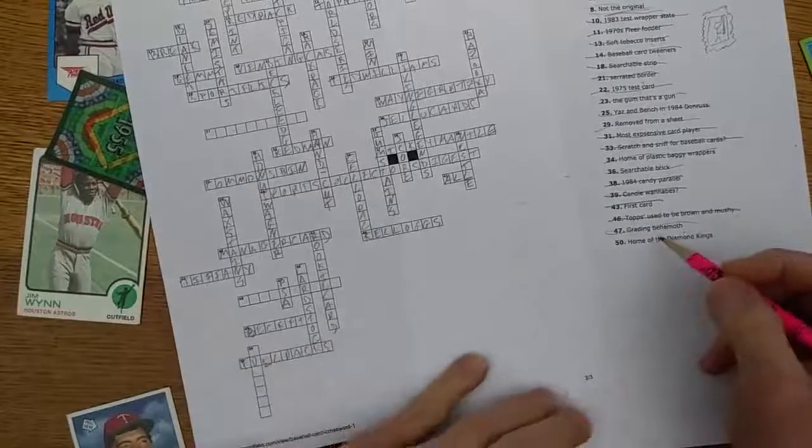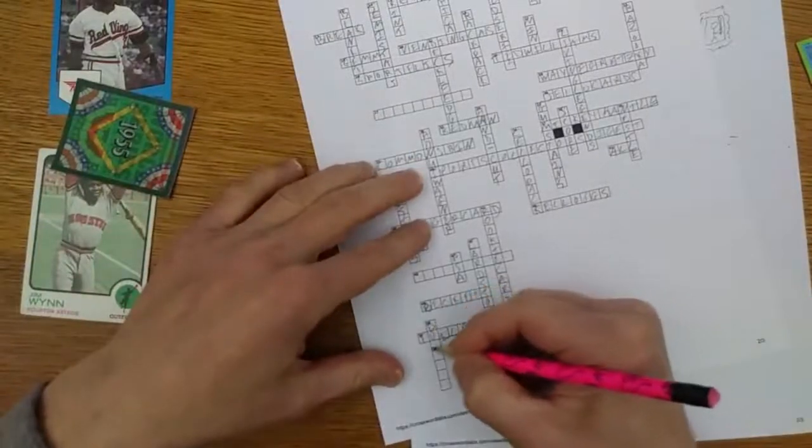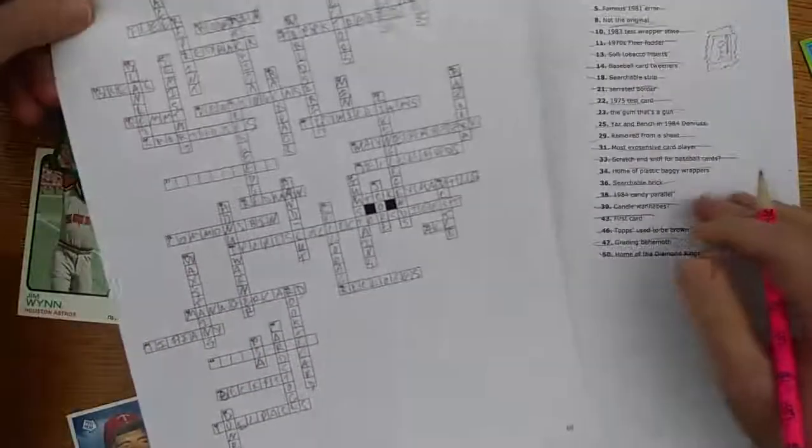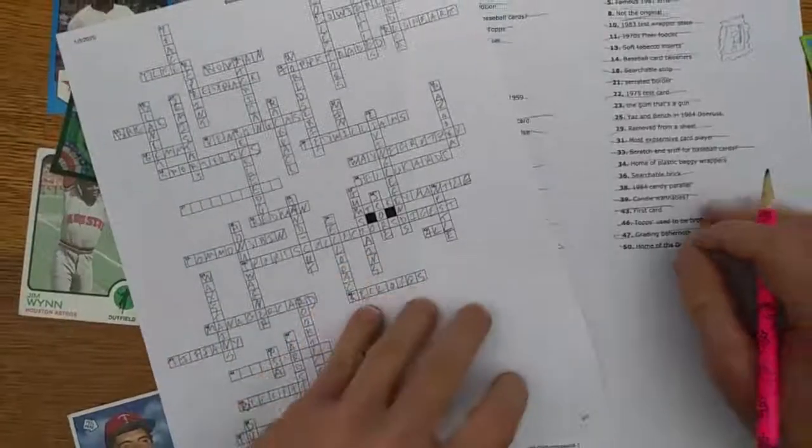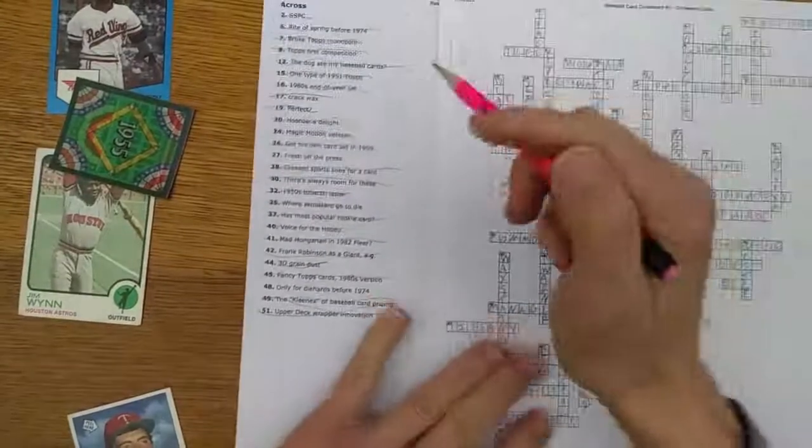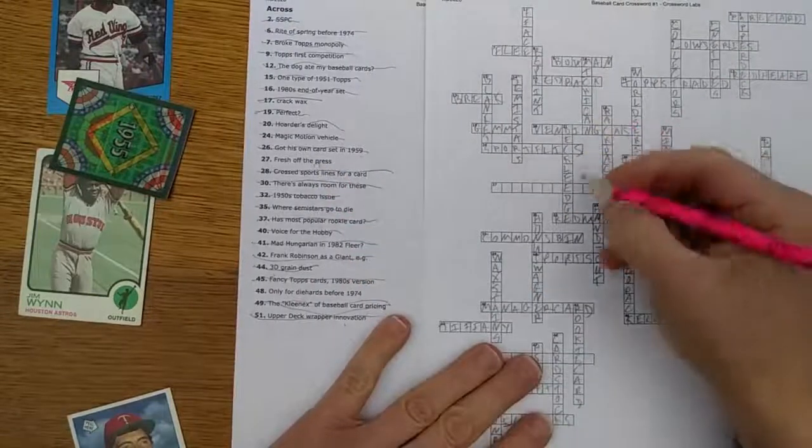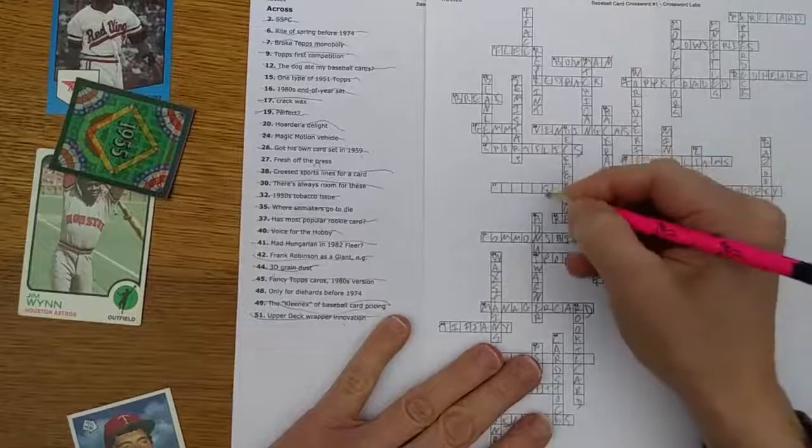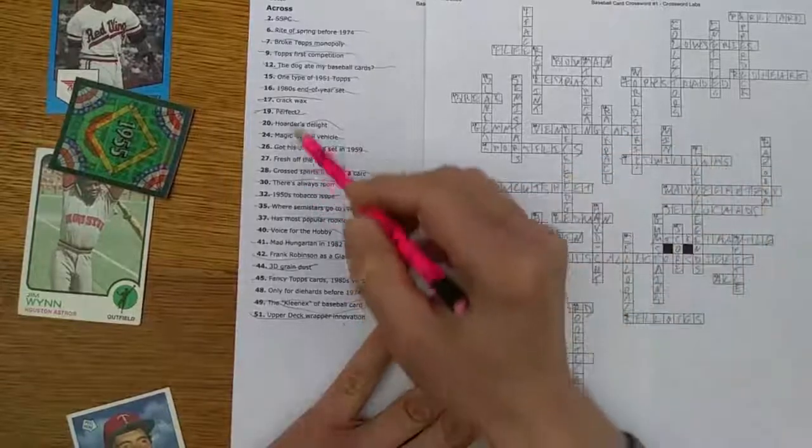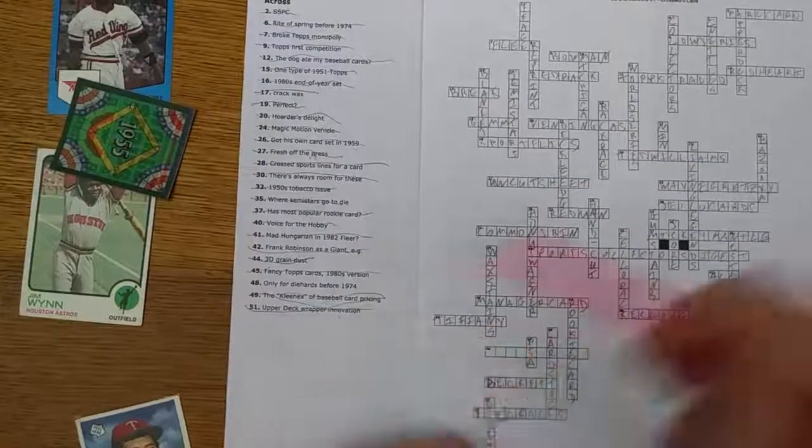Home of the Diamond Kings - it's got to be Donruss. I'm getting close now. So even with my heavy inside edge, I've still got a couple that I haven't figured out yet. Looks like we got all the down clues done, and on the across we have fresh off the press. It's got to be a sheet of some sort. Ah yes, what kind of sheets do we have in baseball cards? Uncut sheets. A thing of beauty.